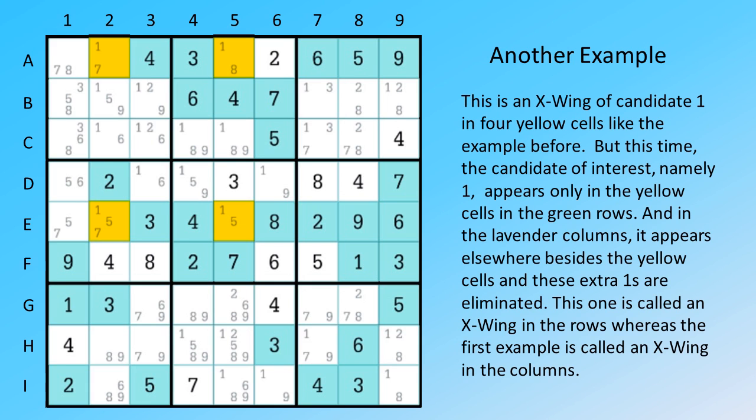This is an X-Wing of candidate one in four yellow cells like the example before. But this time, the candidate of interest, namely one, appears only in the yellow cells in the green rows.